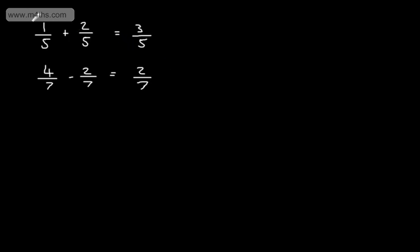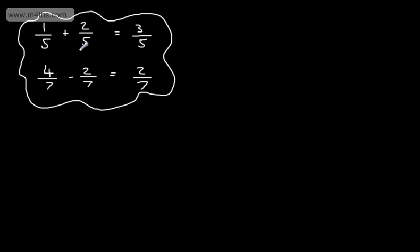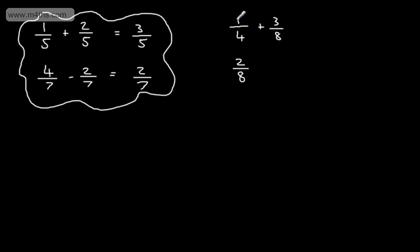When adding or subtracting fractions, the denominator must be the same. If it's not the same, we can use equivalent fractions to find a common denominator. So let's say we had 1 over 4 plus 3 over 8. I can only add them if I have a common denominator. So we can see that the denominators are different. What I'm going to do is rewrite this as an equivalent fraction — I'm going to put this fraction in terms of 8s. If I've got 1 over 4, I'm going to have 2 over 8. All I've done is multiply the numerator by 2 and the denominator by 2 to get an equivalent fraction with the same denominator. So now I've got 2 over 8 plus 3 over 8, which gives me 5 over 8.